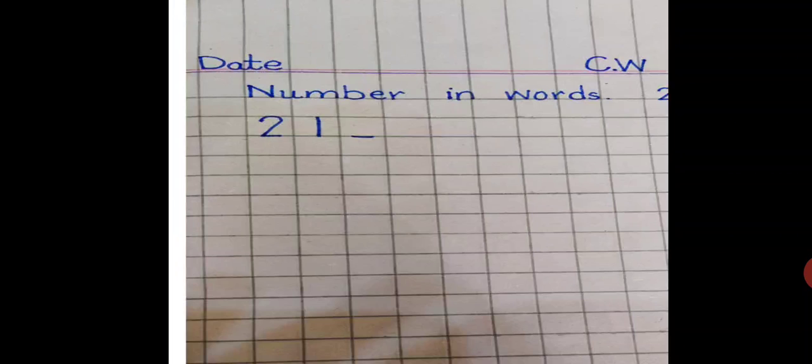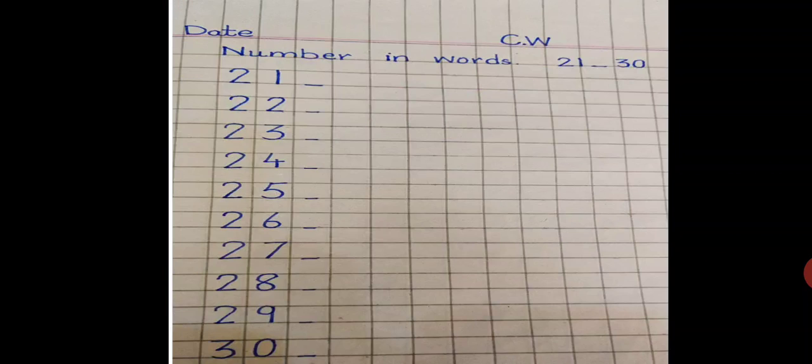After writing 21, in the next box make a dash, and in this way get your page ready. Below 21, you will skip one box and write 22. After 22, 23.